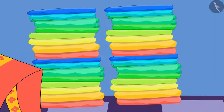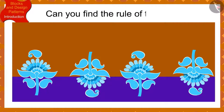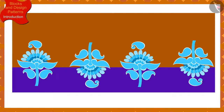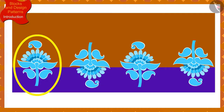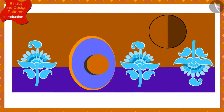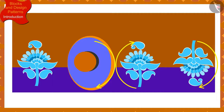Children, if Banno has made such a design on one of the saris, can you find the rule of this pattern? If you wish to, you may stop the video and think of the answer. If we look closely, we will find that this impression has been made by rotating the previous impression by half in the clockwise direction. In order to create this pattern, Banno has rotated the block of the design by half in the clockwise direction each time.